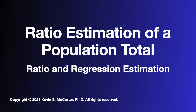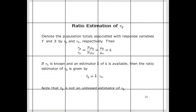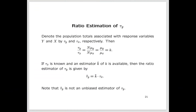Continuing on, we're going to look at ratio estimation of a population total. Denote the population totals associated with response variables y and x by τ_y and τ_x respectively. Then the ratio of the population totals, τ_y divided by τ_x, will also be equal to k — so there's a proportionality relationship between the totals as well.